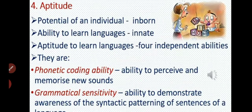Another factor is aptitude. Aptitude means the potential of an individual to do something. कुछ inborn potential होती है — कुछ की inborn ability to learn languages होती है, innate powers — यह decide करती है. Aptitude to learn languages involves four independent abilities.